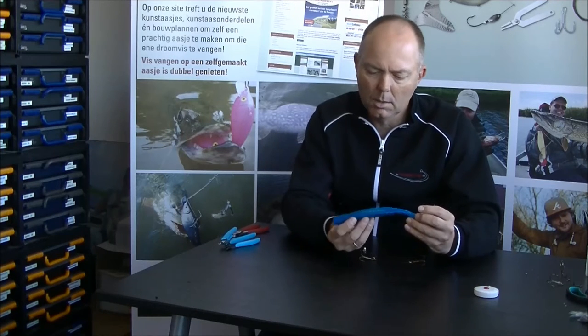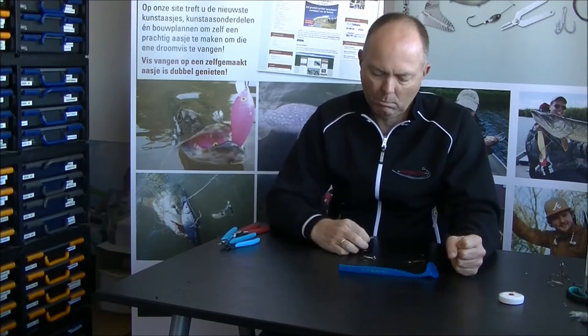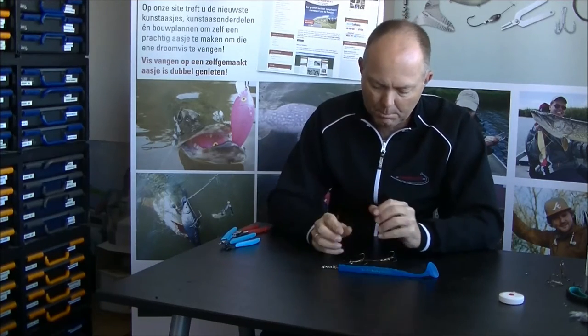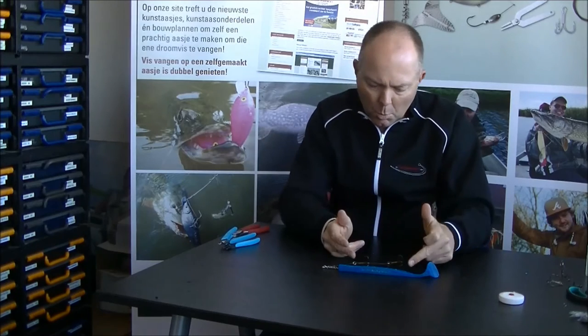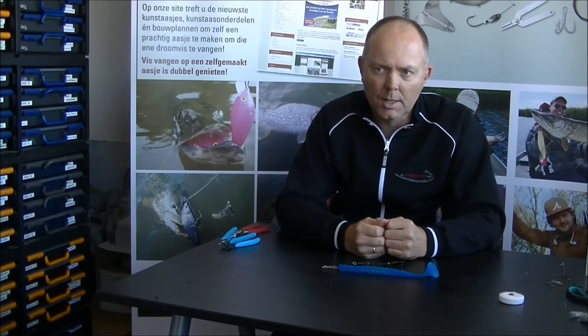Shallow rigs are very popular at the moment and they're mainly used on big soft baits like this one. It's a 9 inch shad, 23 centimeters. A shallow rig is screwed into your soft bait. A big advantage is that you can fish your soft bait very shallow over the weeds, for example. Another advantage is when you hook a pike, the trebles which are placed under the shad come out, and that way your soft bait doesn't get damaged that easily.